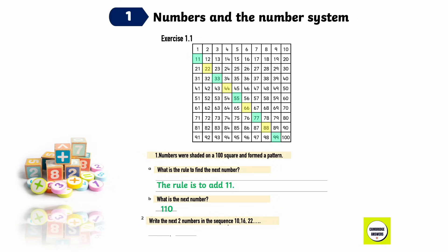The sequence 10, 16, 22 continues in the same way. Write the next two numbers in the sequence. The difference between 16 and 10 is 6, and the difference between 22 and 16 is 6. So we are going to add 6 to 22 to get 28, and then add 6 to 28 to get 34.